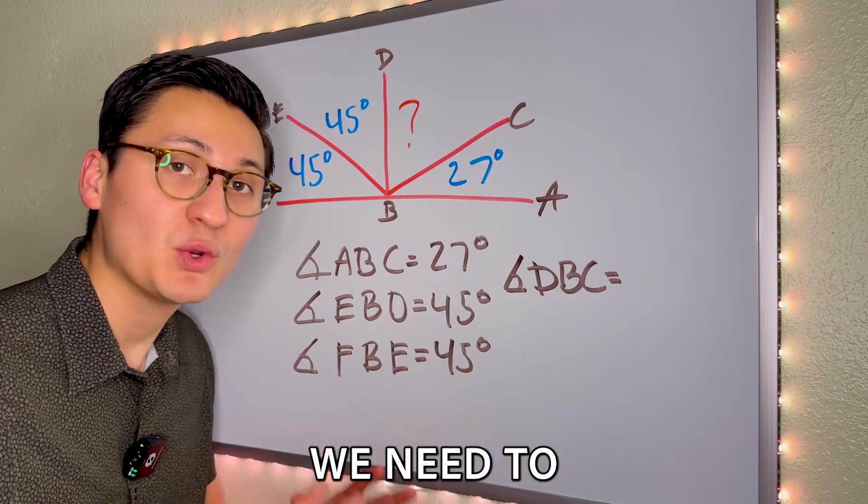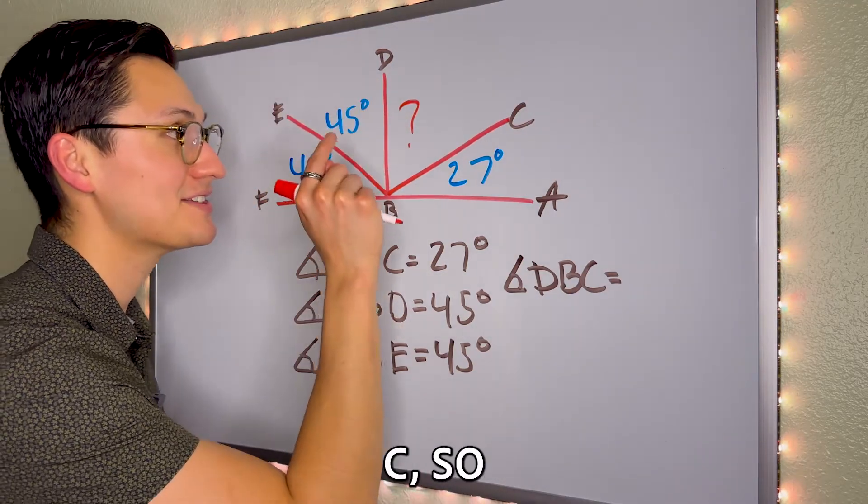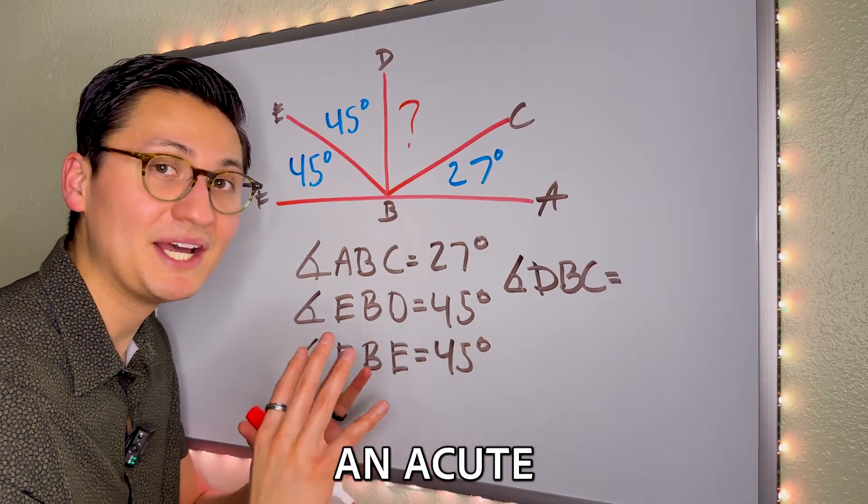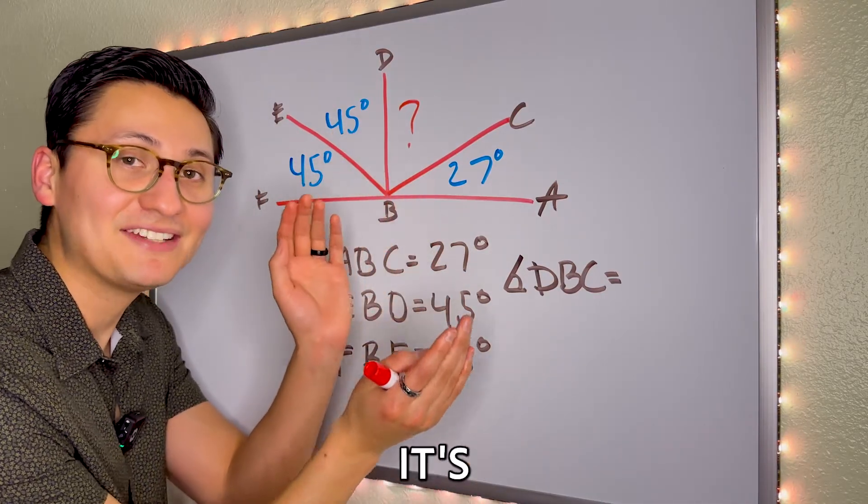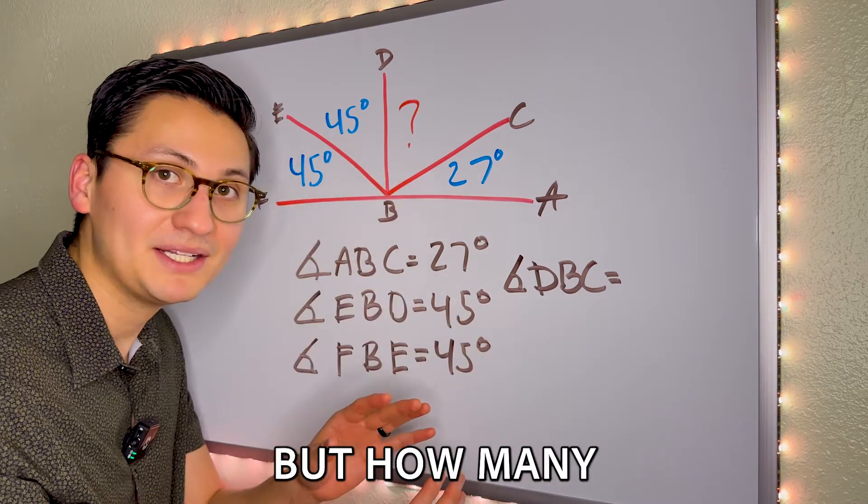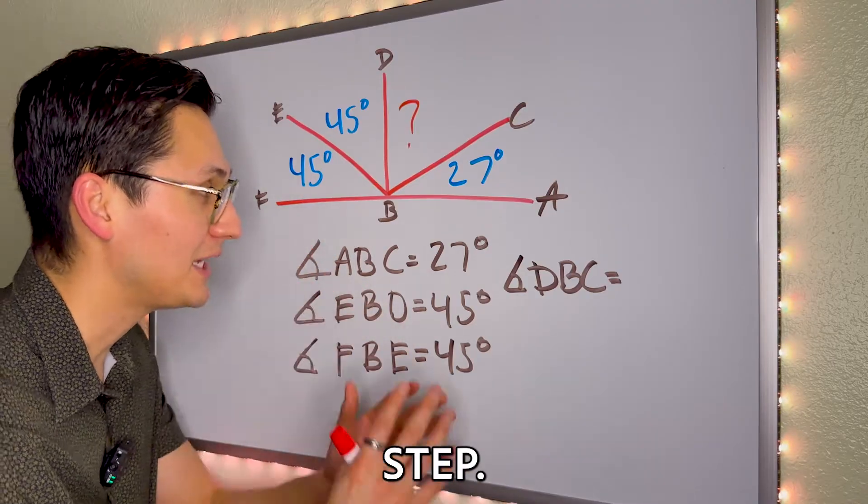Last but not least, we need to figure out the degree of angle D, B, C. So it looks like it's going to be an acute angle because it's small. It's so cute. It's less than 90 degrees, but how many degrees is it? Well, let's break this down step by step.